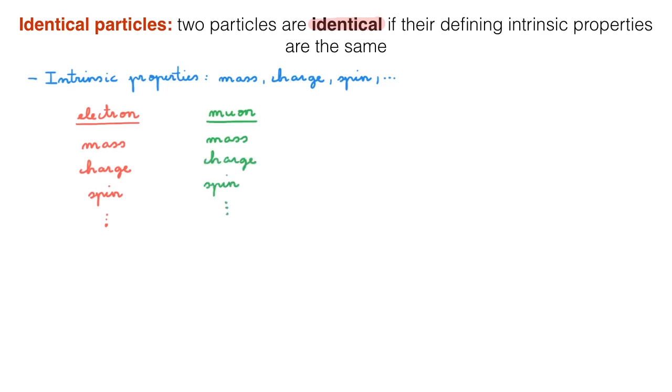However, muons and electrons are not identical because they have the same charge and the same spin, but they don't have the same mass. Another example of an elementary particle is the positron. It is the antiparticle of the electron, and as such it has the same mass and the same spin, but a different charge. So although all positrons are identical amongst themselves, they're not identical to electrons.